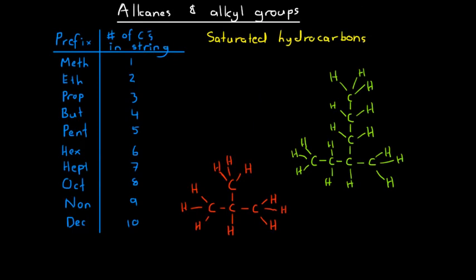Alkanes are saturated hydrocarbons and they have the general molecular formula CₙH₂ₙ₊₂. So if there are n carbons in our alkane, then we're going to have 2n+2 hydrogen atoms in our molecule.